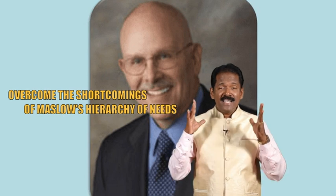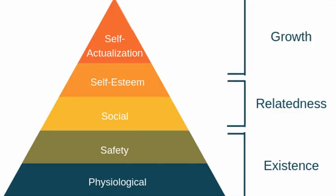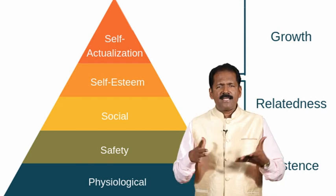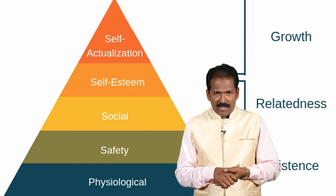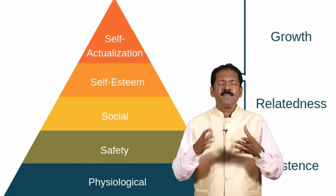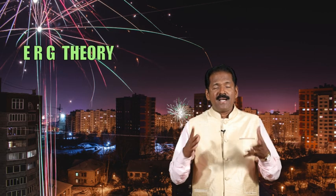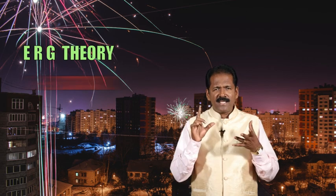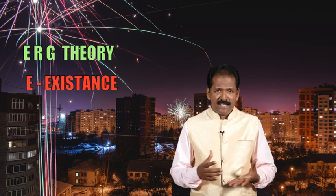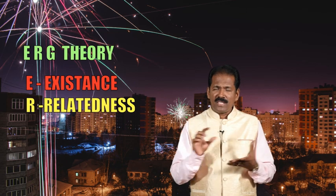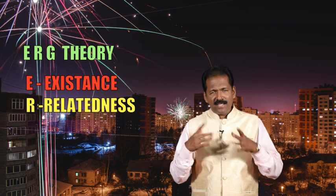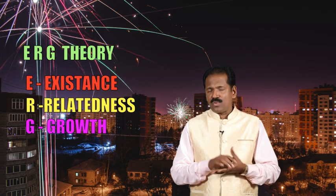Alderfer says there are three needs in every human being, and he categorized all the needs into three categories. Based on these, the theory has been named the ERG theory of motivation. E stands for existence, R stands for relatedness, and G stands for growth.